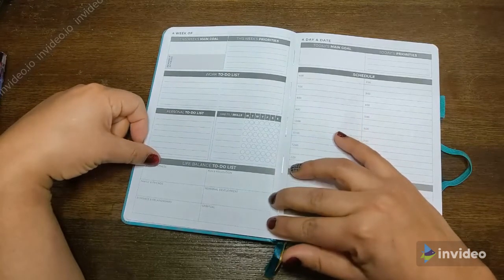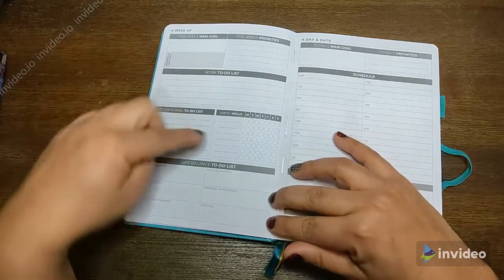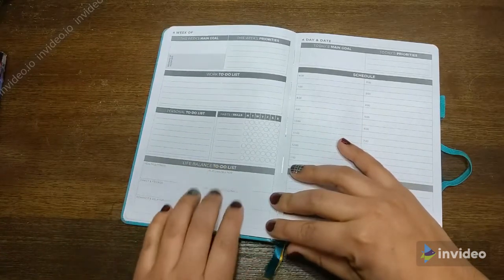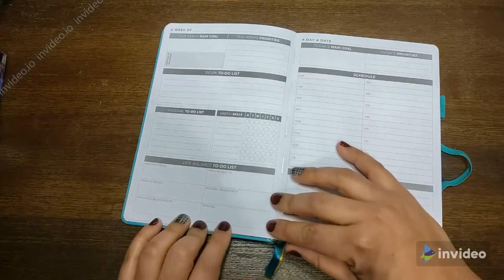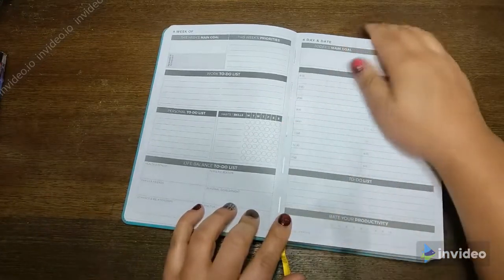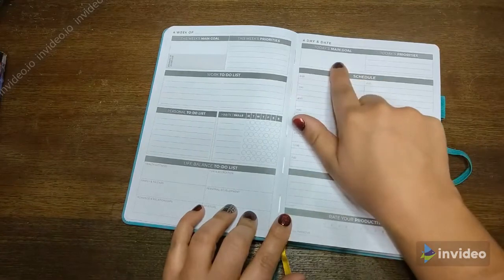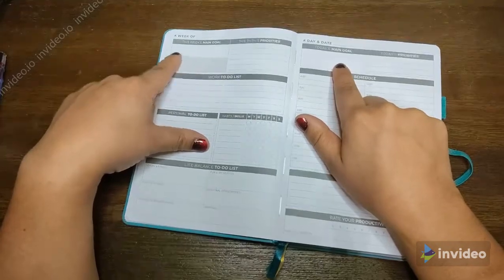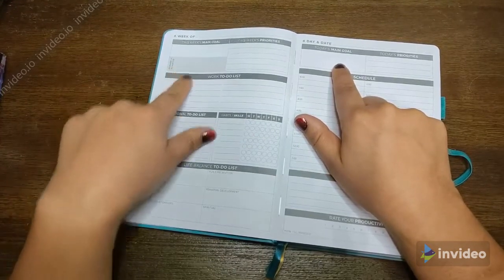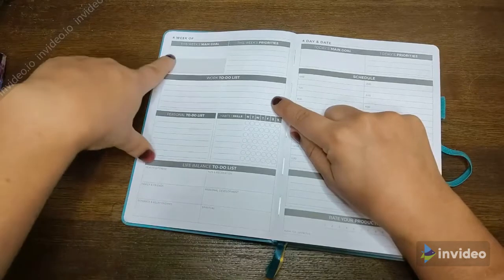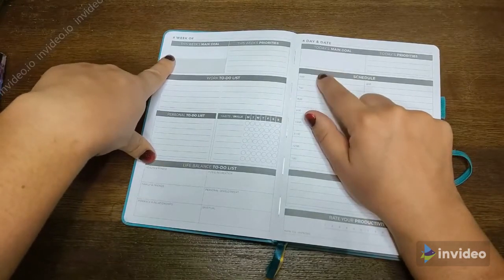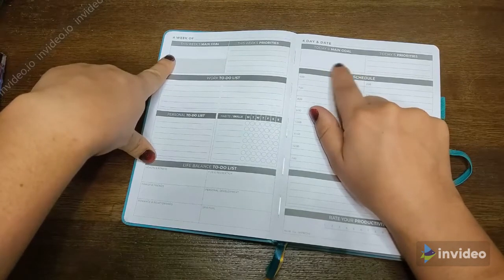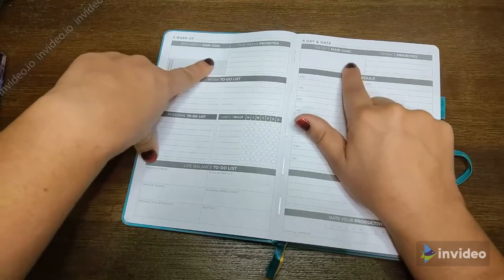Then a habit tracker and these are your life balance areas. Earlier with the goal setting there were different areas where you could goal set and it looks like this keeps you top of mind of what you're actually trying to work on in these areas, which I think is really nice. Then this flips over to the daily page. You've got your today's main goal, which I'm assuming you pull from whatever. Like you have a goal this week to cook three times this week, maybe today's main goal would be to plan the menu or to go grocery shopping or something.